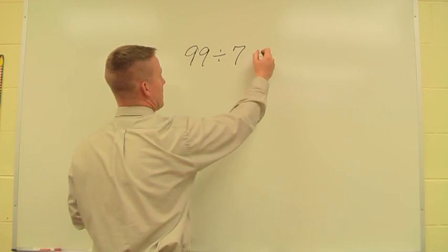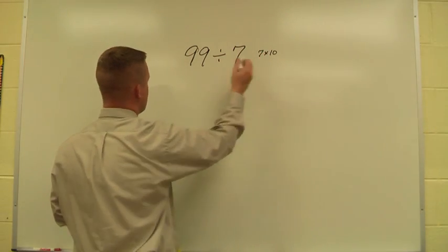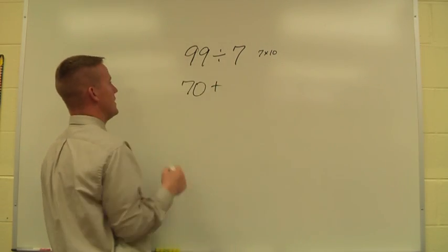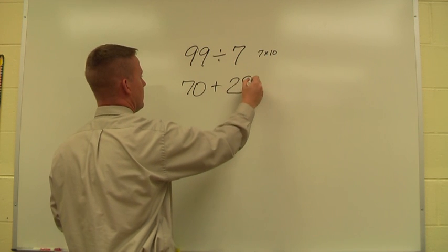So the first thing we think of is what is 7 times 10? That gives me my first friendly number, which would be 70. Then I think what plus 70 gives me 99? The missing number would be 29.